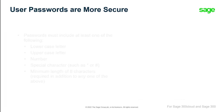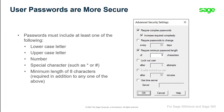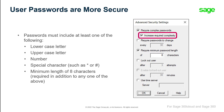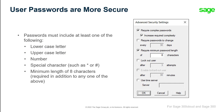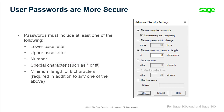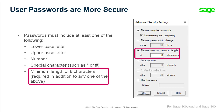Changes have been made to the user password requirements to make Sage 300 more secure. In Sage 300 database setup, on the Advanced Security Settings screen, a new Increase Required Complexity option lets you require that passwords include at least a lowercase letter, uppercase letter, number, and special characters such as an asterisk or pound sign. If you specify a minimum password length, it must be at least 8 characters.